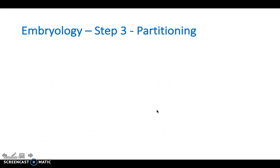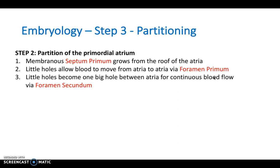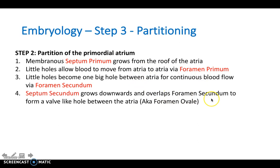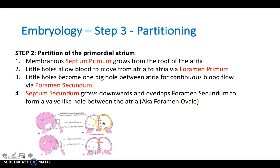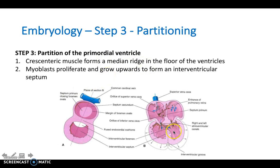To partition the AV canal, the endocardial cushions — present on the ventral and dorsal aspects — simply come together and fuse to form the AV valves. For partition of the primordial atrium, the membranous septum primum grows from the roof of the atria, and small holes allow blood to move between atria via the foramen primum. These holes become one big hole for continuous blood flow via the foramen secundum, and the septum secundum grows downwards and overlaps to form a valve-like structure — the foramen ovale — allowing fetal shunting of blood from right to left. For the ventricles, a crescentic muscle forms a median ridge in the floor and grows upward by myoblast proliferation to form the interventricular septum.